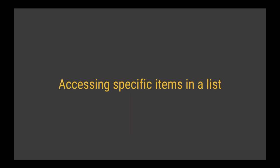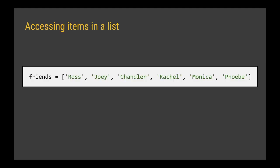Having seen how to create a list and how to use a for loop to print out all of the items in the list, very often you will want to access a specific item. So let's imagine we've got a list called 'friends' that contains the values Ross, Joey, Chandler, Rachel, Monica, and Phoebe. The variable 'friends' is a reference to the start of the list in memory — it's storing a memory location where this list begins.